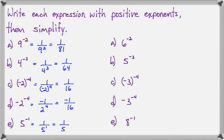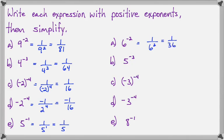Now I want you to try these on your own before you watch the solutions. With 6 to the negative 2, we can write it as 1 over 6 to the positive 2, and 1 over 6 squared is 1 over 36. With 5 to the negative 3, we can write that as 1 over 5 to the positive 3, and 5 to the 3rd is 125, so we have 1 over 125.